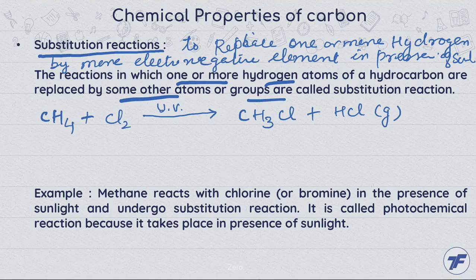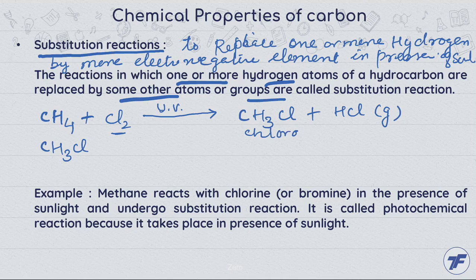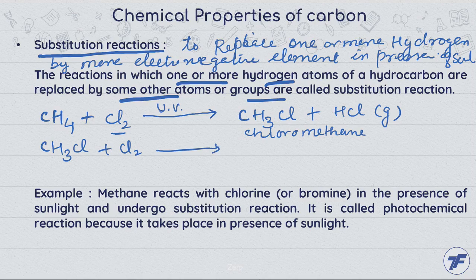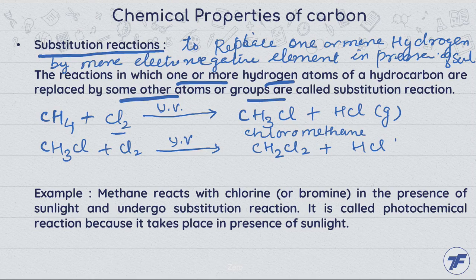Similarly, chlorine is more electronegative as compared to hydrogen, so it will replace hydrogen further. This chloromethane is not very stable, so it reacts again with chlorine in the presence of ultraviolet radiations, and is converted to the form of dichloromethane.